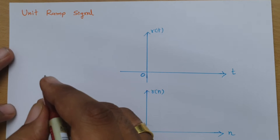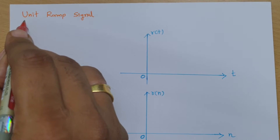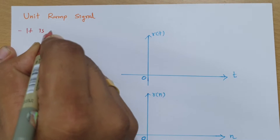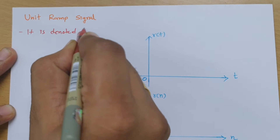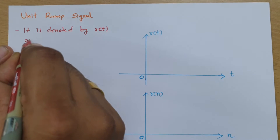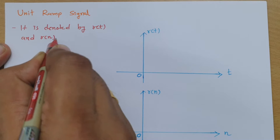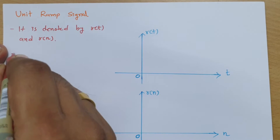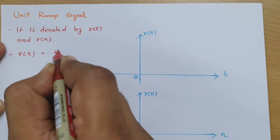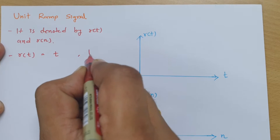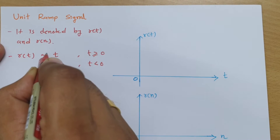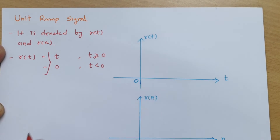Let us begin with the first agenda — how we denote the unit ramp signal. It is denoted by r(t) in case of continuous time and r[n] in case of discrete time. The function r(t) equals t for t greater than or equal to 0, and it will be 0 for t less than 0. So in continuous time, this is how we define it.